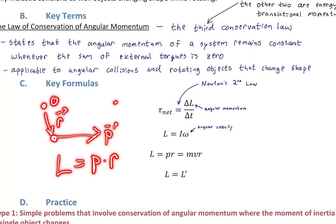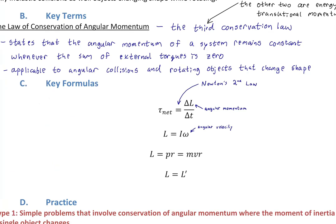For translating objects, angular momentum can be expressed as mv times r, as long as there's a well-defined r — some pivot point or origin from which you're measuring. If there's no pivot, it makes no sense to express the angular momentum of a translating object.